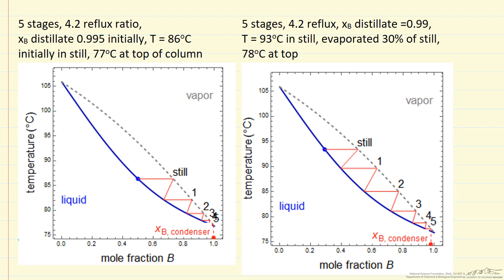So 86 degrees you can see the blue and then 77, a little harder to see this red point here. And then after we've evaporated 30 percent, notice the stages and the locations have changed. The temperature is now 93 degrees in the still and then 78 at the top of the column.